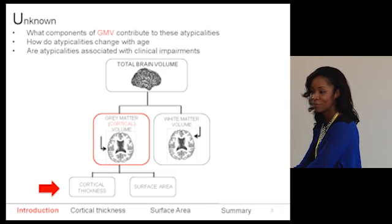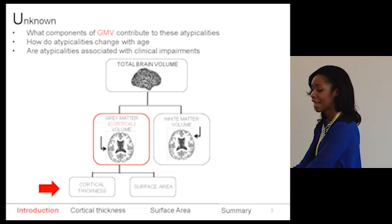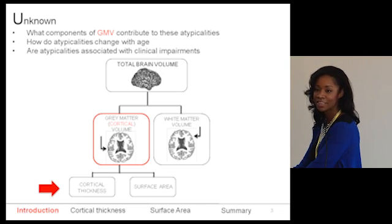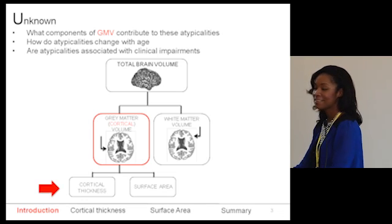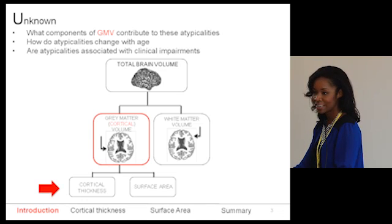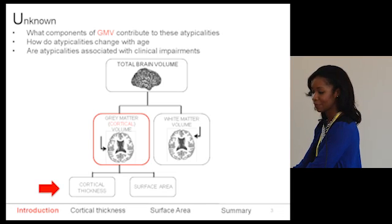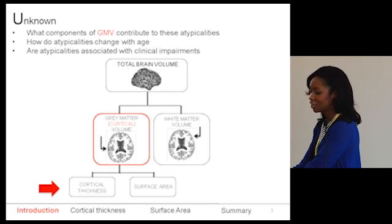Other studies have looked at gray matter volume, and these data collectively have shown that gray matter volume in the frontal and temporal lobes is particularly increased in individuals with ASD. This is interesting because these are the lobes implicated in social cognition and other behaviors that can be atypical in ASD. What is still unknown is what components of gray matter volume contribute to these atypicalities, how they change with age, and how they're associated with clinical impairments.